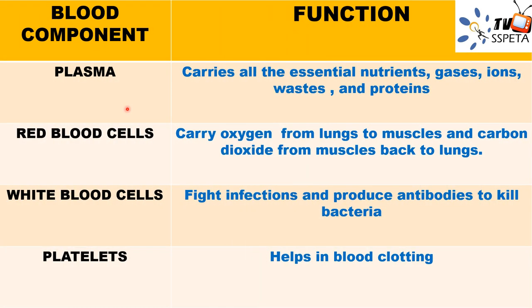Here is a summary of the blood components. Plasma carries all the essential nutrients, gases, ions, waste, and proteins. Red blood cells carry oxygen from the lungs to working muscles, which use oxygen for respiration to produce energy; the byproduct is carbon dioxide. The red blood cells then take up that carbon dioxide and bring it back to the lungs where gaseous exchange occurs and it is breathed out.